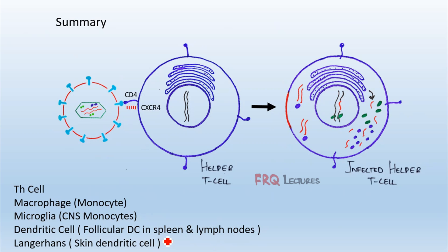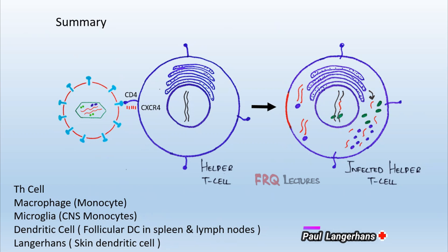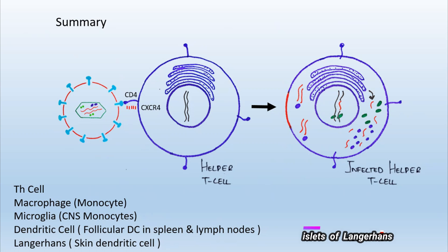There are also special dendritic cells found beneath the skin. The skin has five layers — the uppermost is the dead layer — and beneath these layers exist special dendritic cells known as Langerhans cells, discovered by Paul Langerhans. They should not be confused with the cells of the pancreas, which are also named after the same German scientist. This concludes the lecture on the HIV replicative cycle and the cell types it targets.